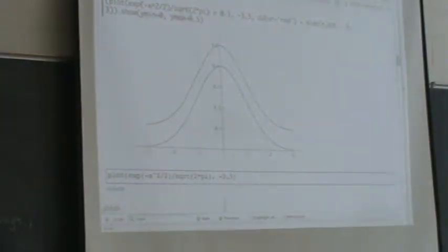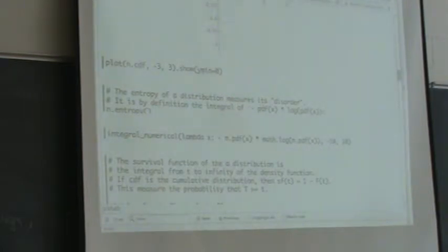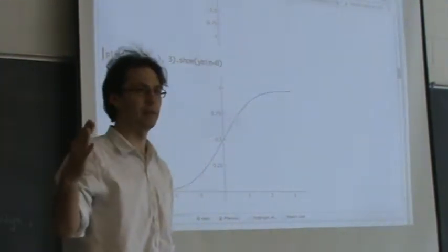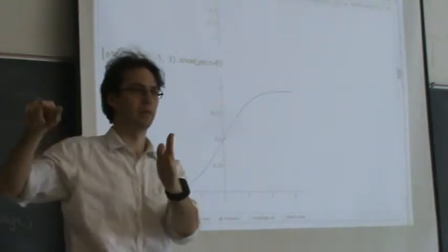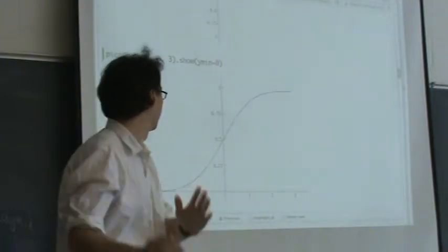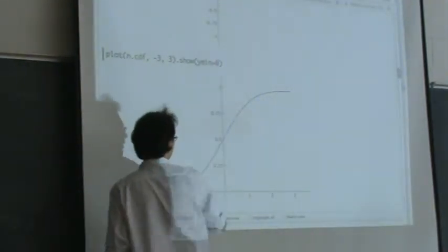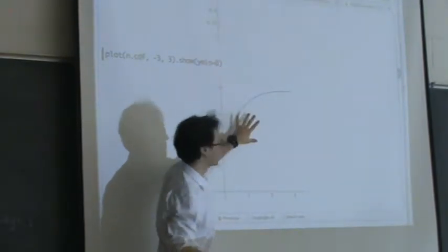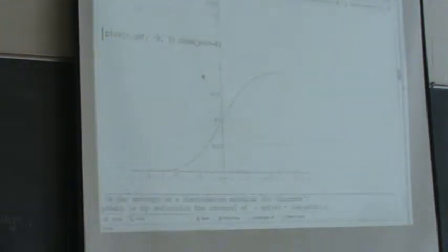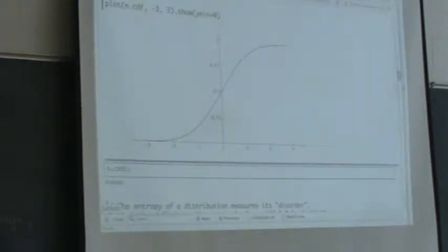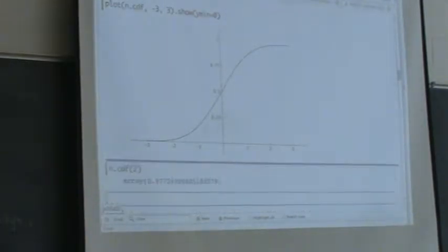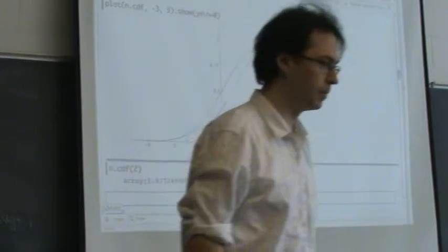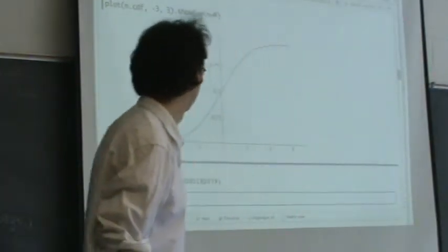That was the probability distribution function. Here's the cumulative distribution function — this is the function that gives you the integral from minus infinity to x of the bell curve, so it's the probability that a randomly selected value will be between minus infinity and some value. For example, n.cdf(2) tells you that if you randomly choose values distributed with the normal distribution with mean 0 and variance 1, the probability that the value will be less than or equal to 2 is 0.977.